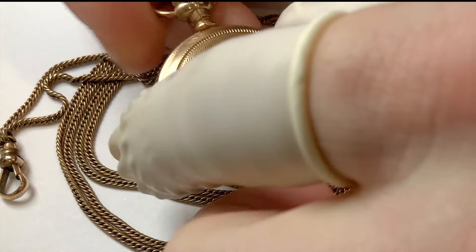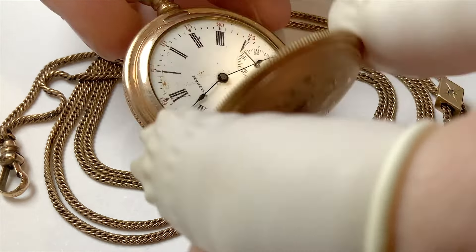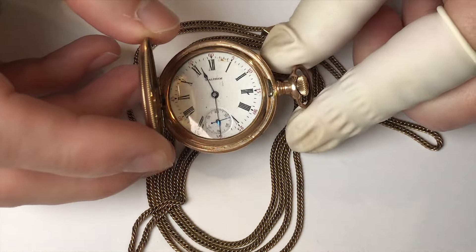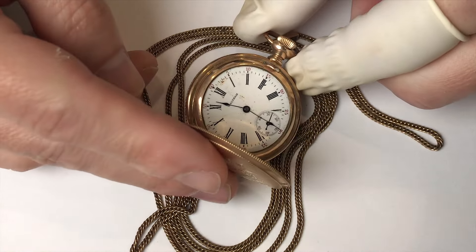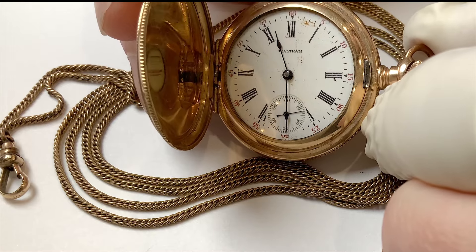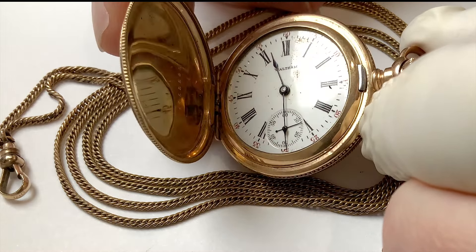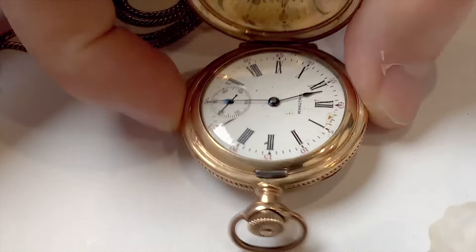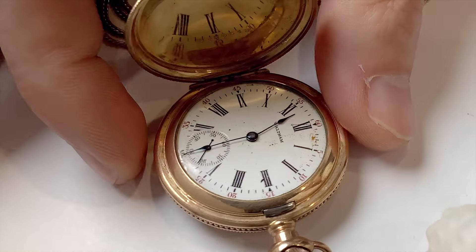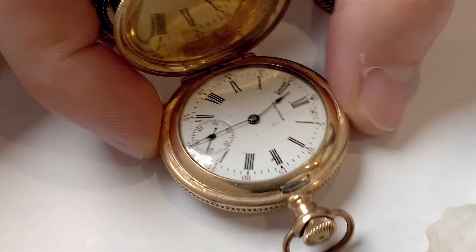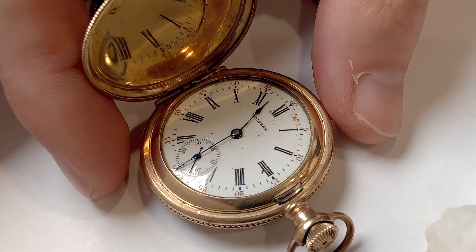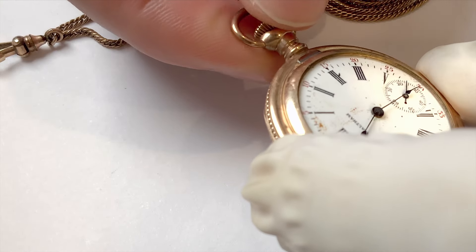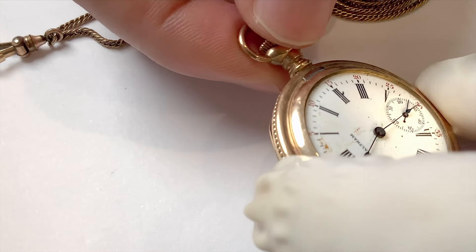Hello and welcome everybody. In this video we have an old Waltham pocket watch. A friend found this pocket watch going through some family belongings. It's missing the crystal and the dial is a little grungy, but these enamel dials usually clean up pretty well. Check out the reflection in that case. Let's see if we can get a little tick out of this.